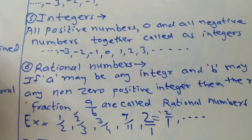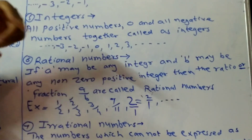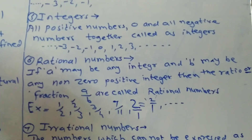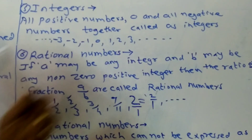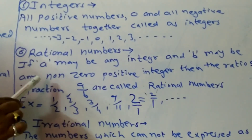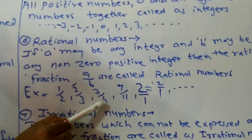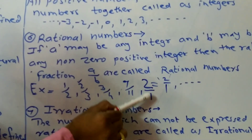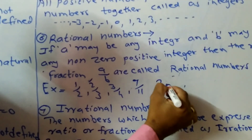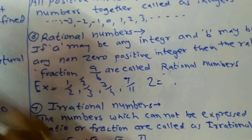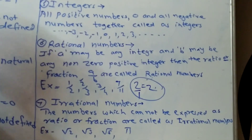The sixth type is rational numbers. Suppose we take two integers a and b. If a is an integer and b is any non-zero integer, then the ratio or fraction of the type a upon b is called a rational number. For example: 1/2, 2/3, 3/4, 7/11, 2/1 which equals 2. So all natural numbers are rational numbers, since any natural number like 2 can be written as 2 upon 1.